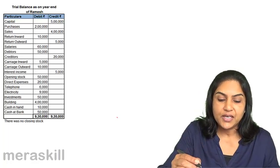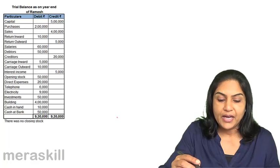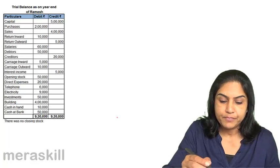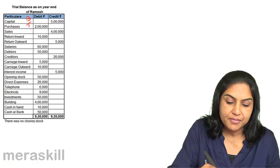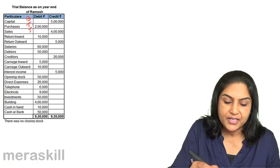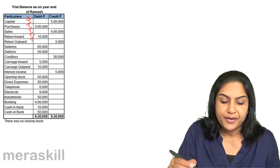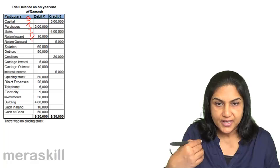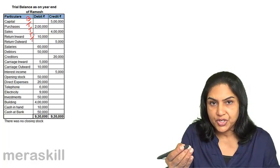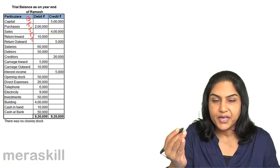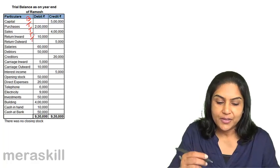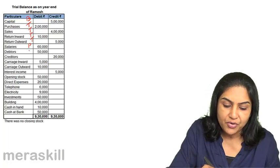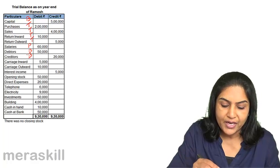The capital account is a balance sheet item. Purchases and sales are trading items. Return inward is sales return; return outward is purchase return. Purchase return would be deducted from purchases, and sales return would be deducted from sales. Salaries will go to the profit and loss account. Debtors is an asset and creditors is a liability — they both go to the balance sheet.